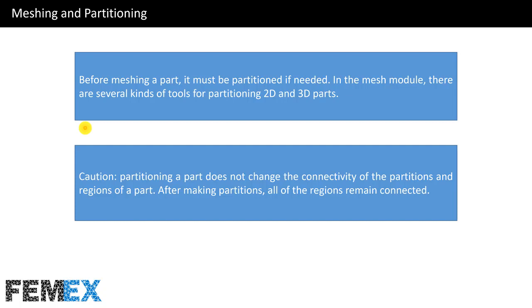Before meshing a part, it must be partitioned if needed. In the mesh module there are several kinds of tools for partitioning 2D and 3D parts. Note that generally partitioning 3D parts is more complex than partitioning 2D parts and needs more experience. Caution: partitioning a part does not change the connectivity of the partitions and regions of a part — after making partitions, all regions remain connected.